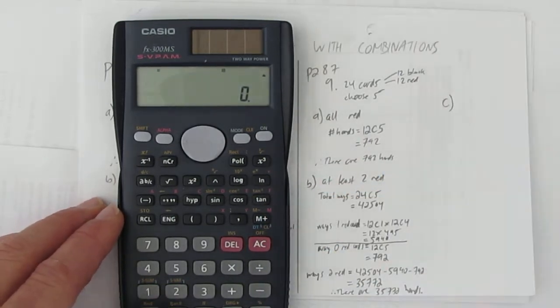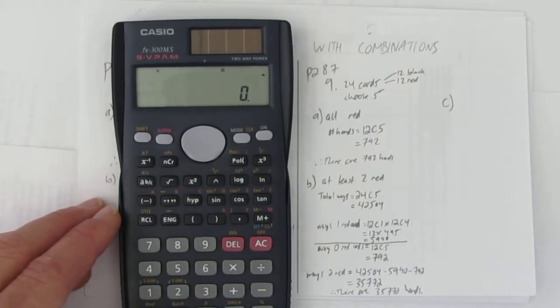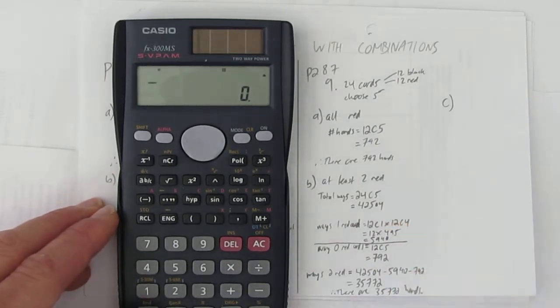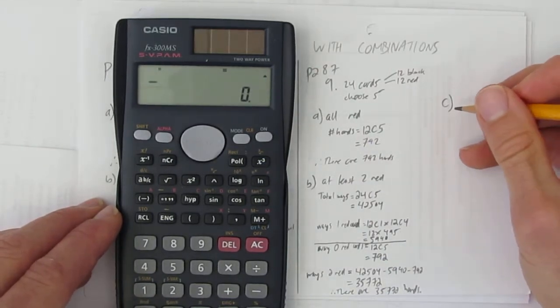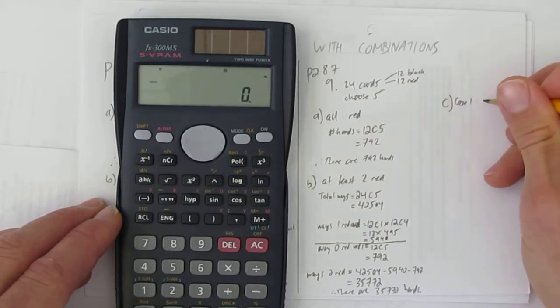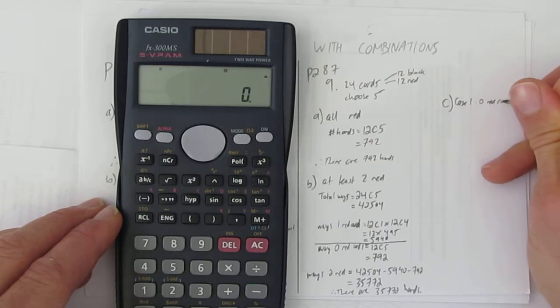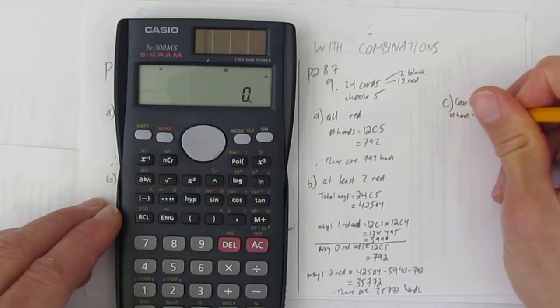Part C, in the same question, says a little different. Instead of at least two red cards, it says at most two red cards. So, this time, instead of subtracting from the total, I think I'll just calculate. If I have to have at most two red cards, I can just calculate three cases. Case one, no red cards. The number of hands with no red cards.